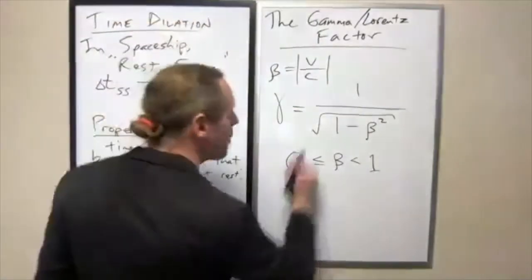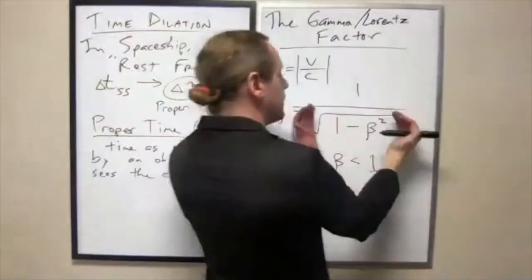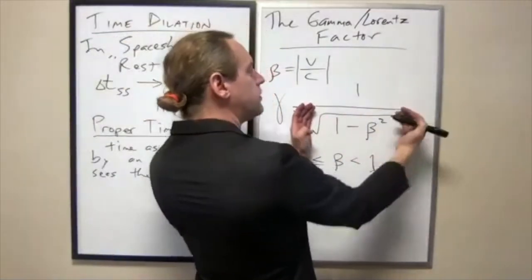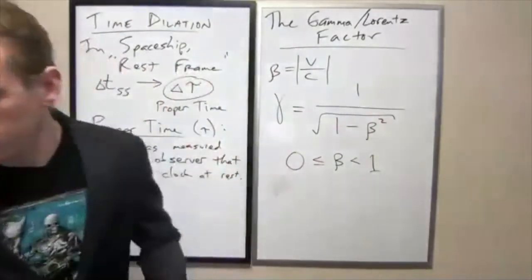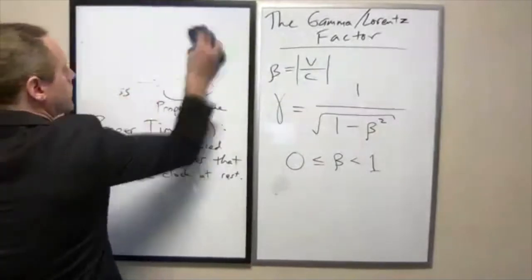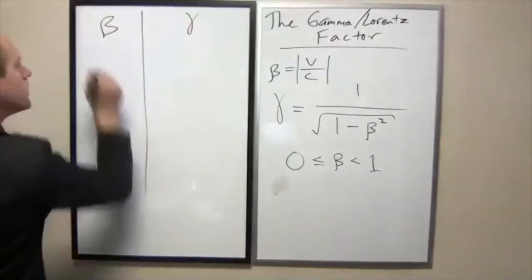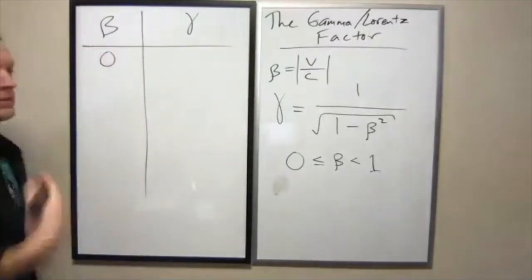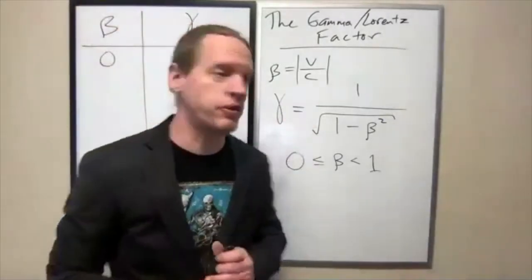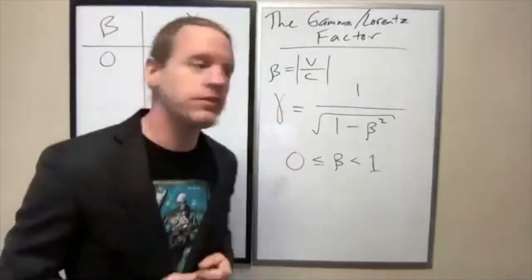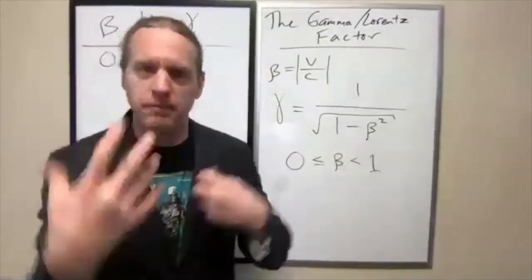So this gamma factor, the bottom side of this, if we look at 1 minus beta, the lowest the whole numerator can be, if beta is 0, this just becomes 1. So if beta is 0, I'm going to make a bit of a table here. So this table is going to be beta and gamma. If beta is 0, the minimum, clearly gamma is 1. So in other words, if you have two reference frames that aren't moving relative to each other, there's not going to be a change in time, and that makes perfect sense. If one delta t is related to the other delta t by that gamma factor, and if gamma is 1, then the two time intervals match.